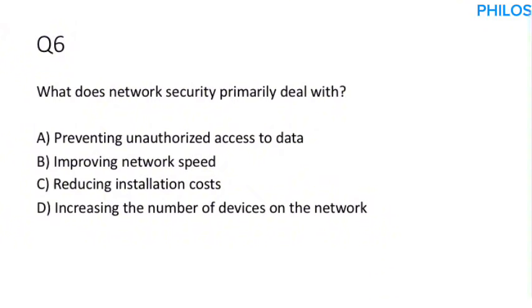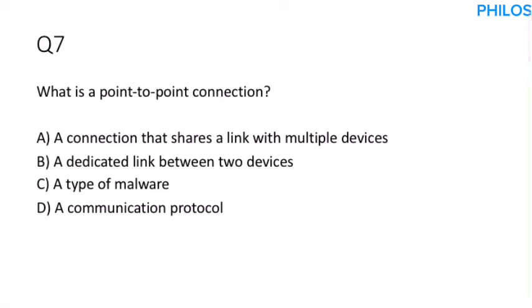Question six: What does network security primarily deal with? Network security primarily prevents unauthorized access to data. The correct answer is option A: preventing unauthorized access to data.